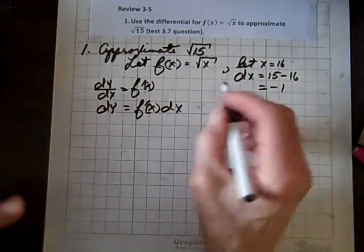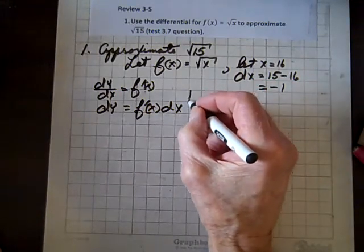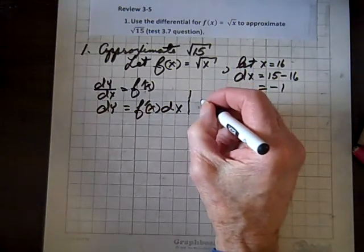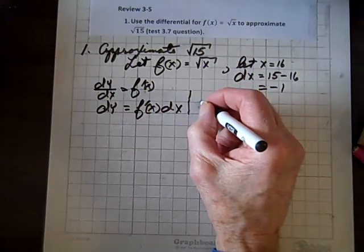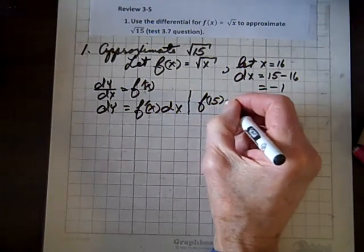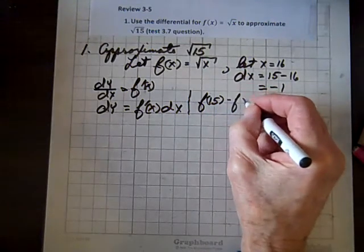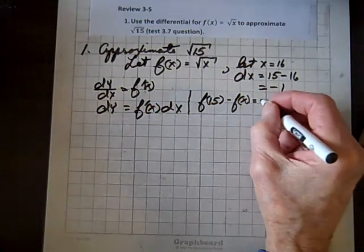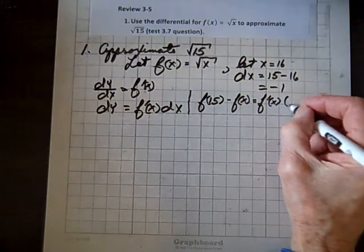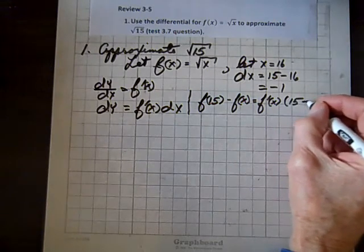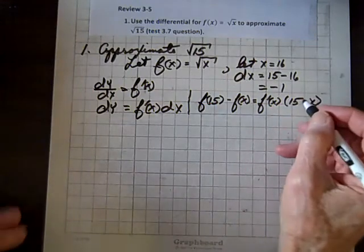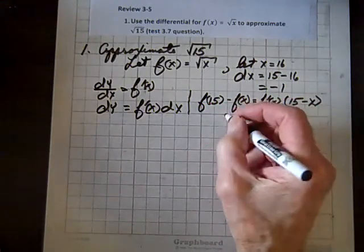And also, using the point-slope form of a line, we know that f of 15 minus f of x equals f prime of x times 15 minus x, where x is 16, but we need a variable so we can deal with the derivative here.